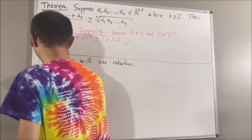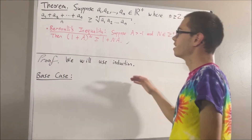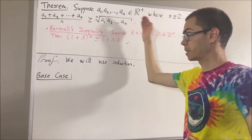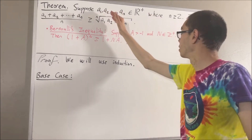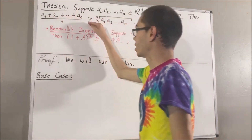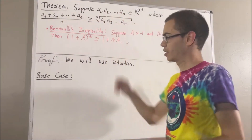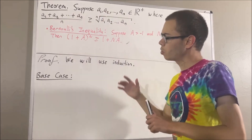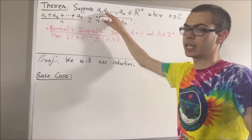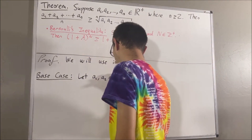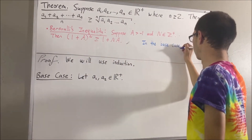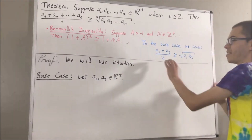Let's start with the base case. In the base case, we are trying to show that given any list of 2 positive real numbers, say a1 and a2, we have that a1 plus a2 over 2 is greater than or equal to the square root of a1 times a2. So, to start out, let's give ourselves a list of 2 positive real numbers — a1 and a2. The whole goal from here is to show that this is true.